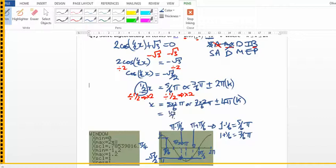So at that we've got 10/6 π or 9/6 π plus or minus 4π. We're almost there. We've almost got all solutions.